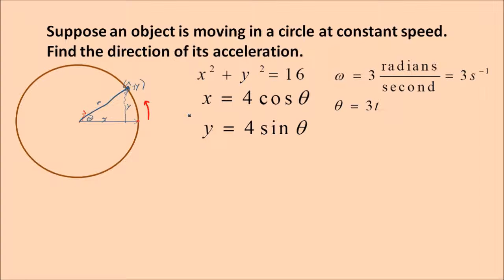As you can see, x here is going to be r times the cosine of theta because that's the adjacent side. And y is going to be r times the sine of theta because that's the vertical side. And r, in this particular instance, is 4. That's the radius. So those are the correct values for x and y. Now suppose that omega - what's omega? That's the angular speed, how fast it's rotating. We'll call it the angular velocity. So it's 3 radians per second. 3 radians is almost half a circle because pi radians is half a circle.